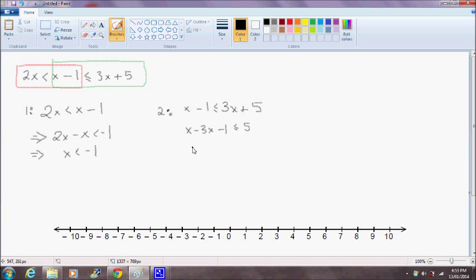This will leave me with minus 2x minus 1 is less than or equal to 5. Now adding 1 to both sides of the equation will give me minus 2x is less than or equal to 4.